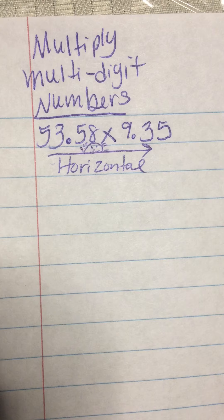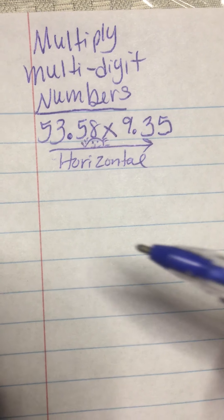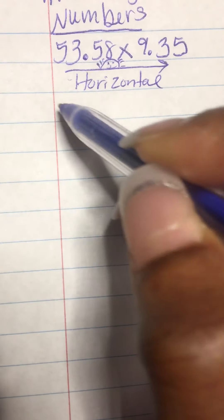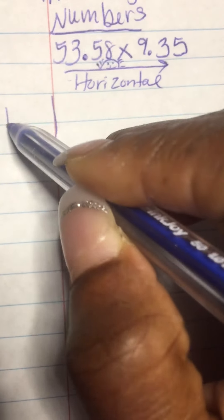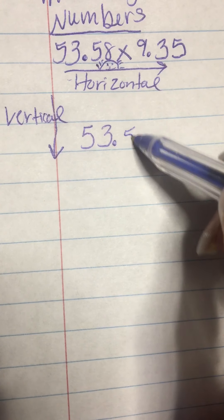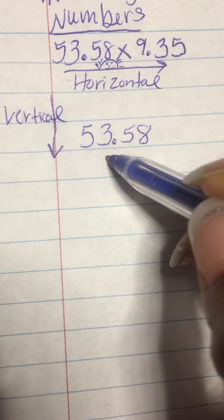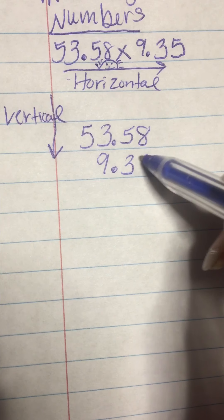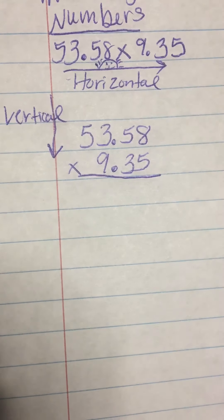We are going to write these numbers vertically and vertically means up and down. This is called vertical and I'm going to put 53.58 here and I'm going to put 9.35 underneath it vertically.